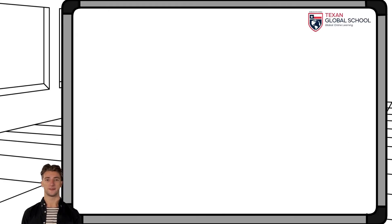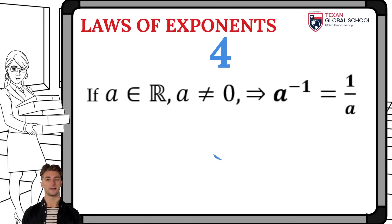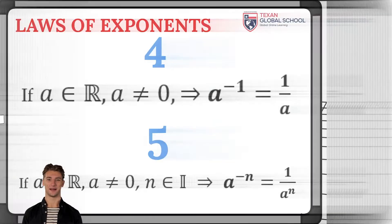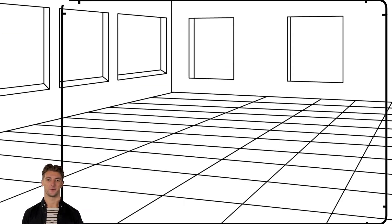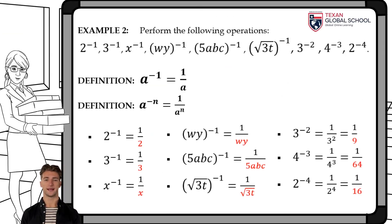The following definition indicates that every number a raised to the negative 1 equals 1 over a. Hence, we have the following definition that indicates that every number a raised to the negative n is equivalent to 1 over a raised to n.